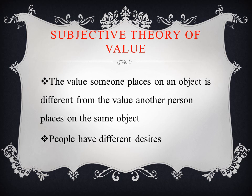The subjective theory of value states that the value someone places on an object is different from the value another person would place on the same object. This is because people have different desires and differing preferences.